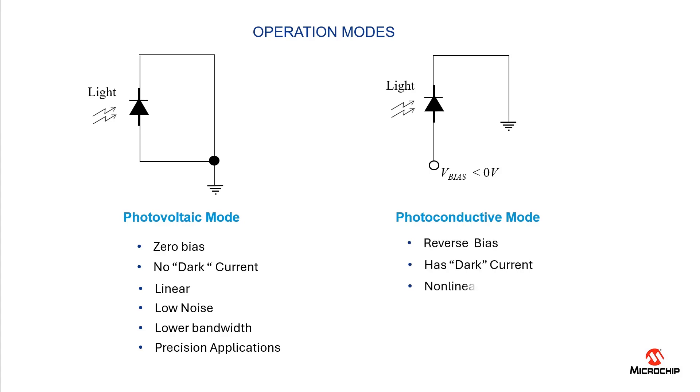For the photoconductive mode, this has a reverse bias voltage placed across the photodiode. The reverse bias voltage reduces the diode junction capacitance and shortens the response time. Therefore the photoconductive mode is suitable for high-speed applications such as high-speed digital communications.